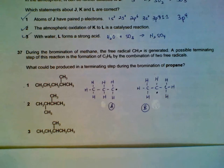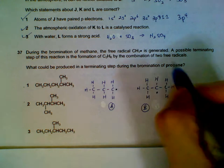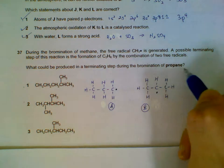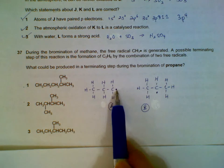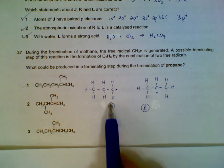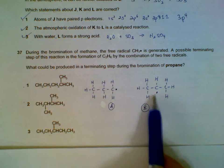What can we produce during the terminating step where it involves propene? For propane, we can remove the hydrogen from the terminal carbon - we'll get this radical. We can also remove the hydrogen from the second carbon - we'll get radical B.